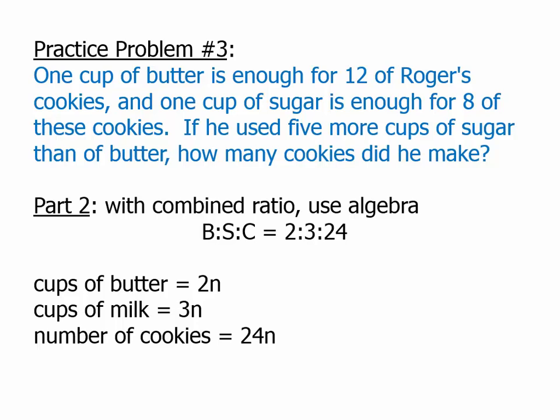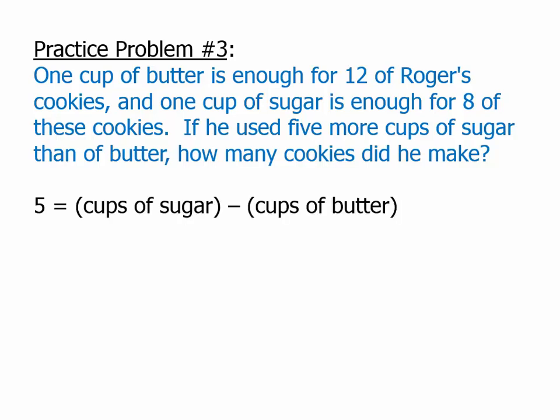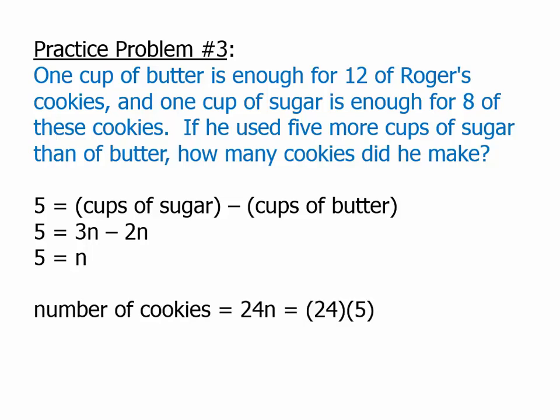So, five equals cups of sugar minus cups of butter. That's the basic equation we have. Well, now we have algebraic expressions for both of those expressions. So, it's going to equal 3N minus 2N. Well, then this becomes very simple. 3N minus 2N is just N. Now we have the value of N. We plug that into the expression for the number of cookies. 24 times 5. Of course, we can use doubling and halving. That becomes 12 times 10, which is 120. And that's the answer. He made 120 cookies.